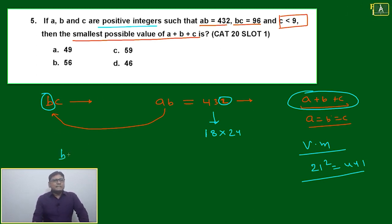Because bc equals 96. It must be in the form of 18k or 24k. 18k is not possible, it is in the form of 24 only: 24 into 4.